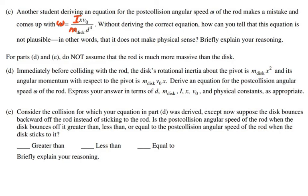For Part D, we no longer assume the rod is much more massive than the disk. We're told that immediately before the collision, the disk's rotational inertia about the pivot is m-disk times x-squared, and its angular momentum with respect to the pivot is m-disk times v-sub-zero times x. We need to derive an equation for the post-collision angular speed omega. Using conservation of angular momentum: angular momentum before equals angular momentum after. Before the collision we have the disk's angular momentum plus the rod's initial angular momentum, which is zero.